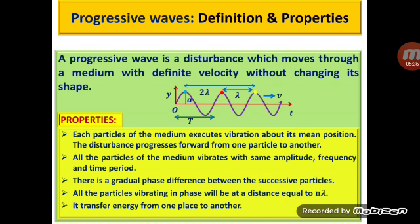For example, if we consider three particles represented by yellow dot, red dot, and blue dot at the same phase, the distance between particles yellow and red is lambda, whereas the distance between particles yellow and blue is 2 lambda. It is clear that all particles vibrating in phase will be at a distance equal to n lambda. Progressive waves transfer energy from one place to another.